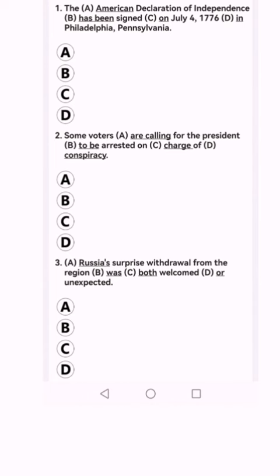For example, number one says: 'The American Declaration of Independence has been signed on July 4th, 1776 in Philadelphia, Pennsylvania.' When we're talking about a specific time, we cannot use present perfect — we have to use the simple past tense. So the answer would be B, 'has been signed.' The correct answer would be 'was': 'The American Declaration of Independence was signed on July 4th, 1776 in Philadelphia, Pennsylvania.'